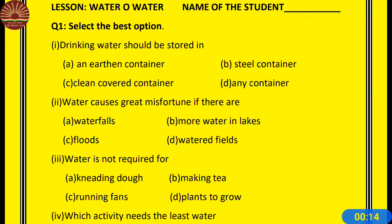Select the best option. Number 1: Drinking water should be stored in A. An earthen container, B. Steel container, C. Clean covered container, and D. Any container. Drinking water should always be stored in an earthen container, because in an earthen container the water gets cooled during summer.